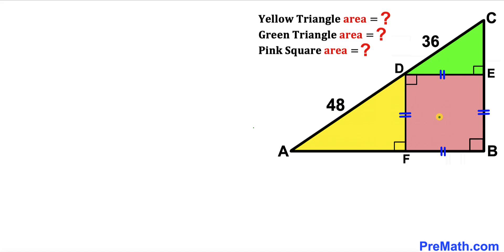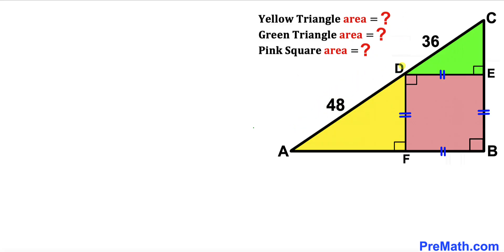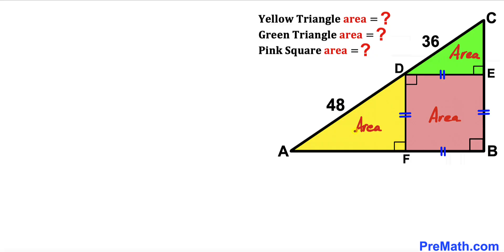Welcome to pre-math. In this video we have this pink square FBED fully inscribed in a big right triangle ABC. As a result we get two right triangles: a yellow right triangle and a green right triangle. Segment AD is 48 units and segment DC is 36 units. Our task is to calculate the area of each region: the yellow triangle, the green triangle, and the pink square — and we are going to calculate these separately.